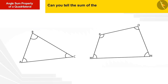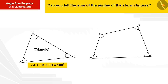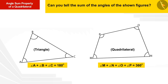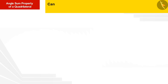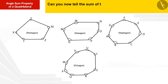Can you tell the sum of the angles of the shown figures? The first shape is a triangle — the sum of all its angles is 180 degrees. The second figure is a quadrilateral, and in the previous video we learnt that the sum of the four angles of a quadrilateral is 360 degrees.